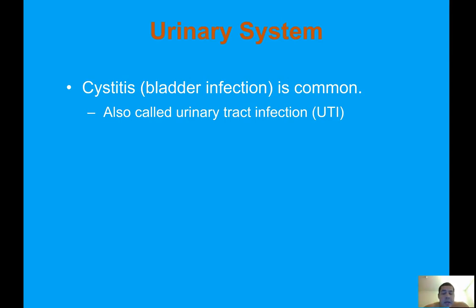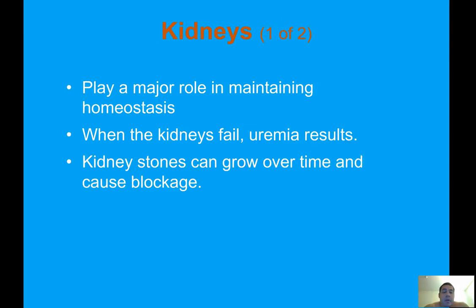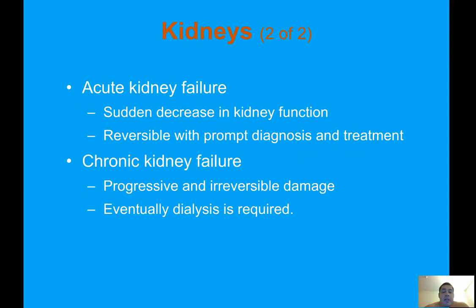Women are more prone to UTIs than men due to their shorter urethra. The kidneys play a major role in maintaining homeostasis. When the kidneys fail, uremia results. Kidney stones can grow over time and cause blockage. Acute kidney failure is a sudden decrease in kidney function that is reversible with prompt diagnosis and treatment. Chronic kidney failure is progressive and irreversible damage — eventually dialysis is required, typically three times a week for three to four hours per session. The only alternative to dialysis is a kidney transplant, which is hard to come by.